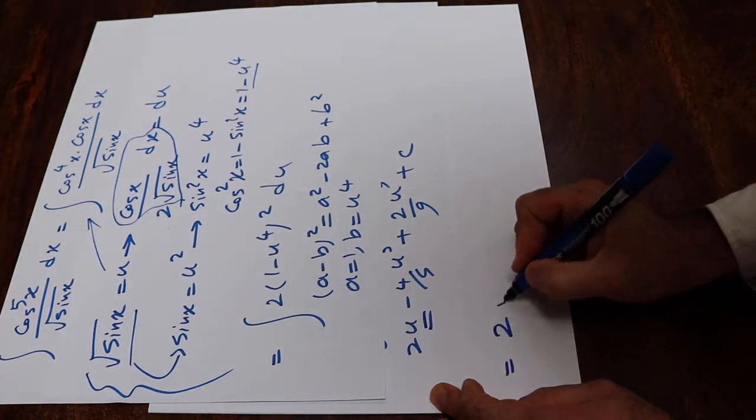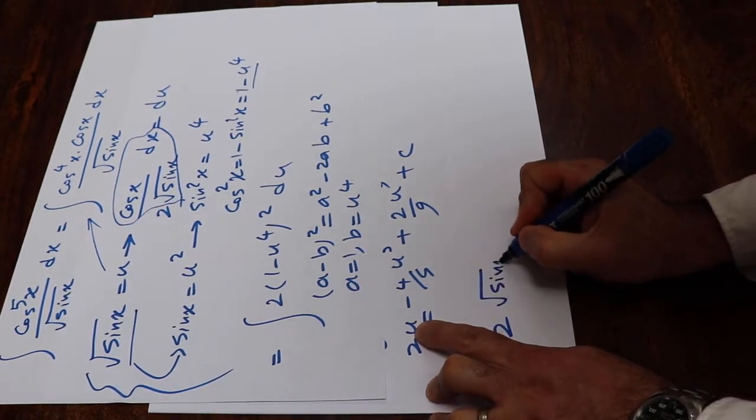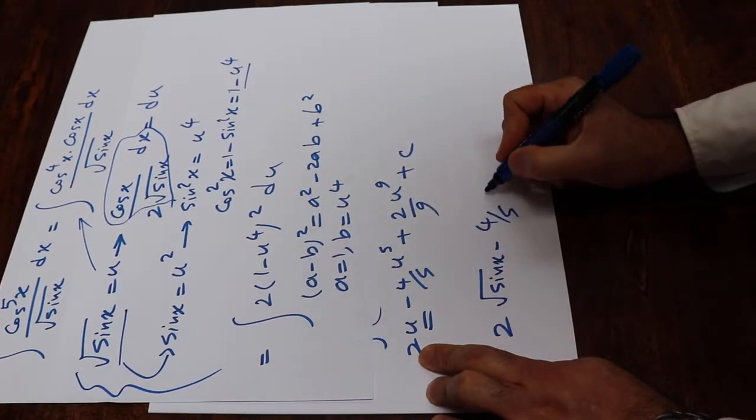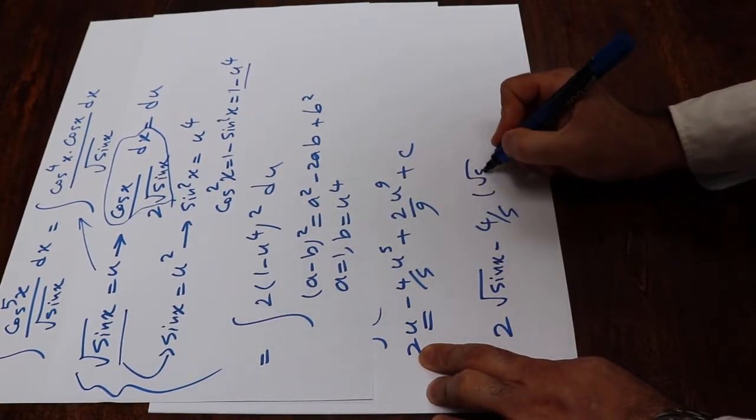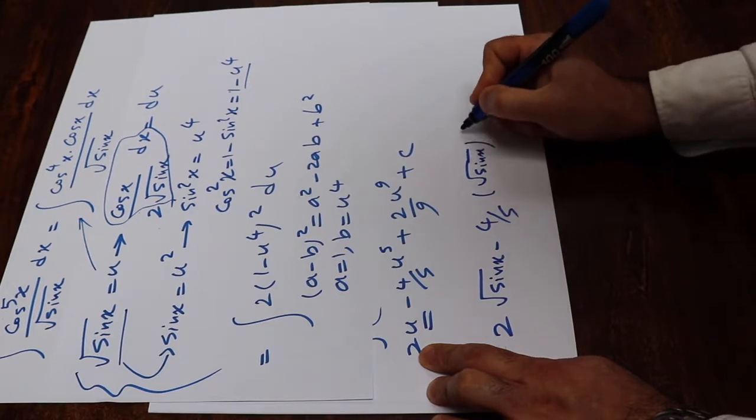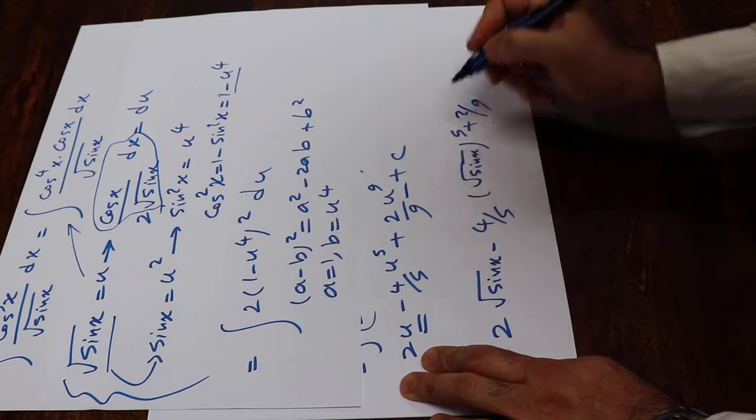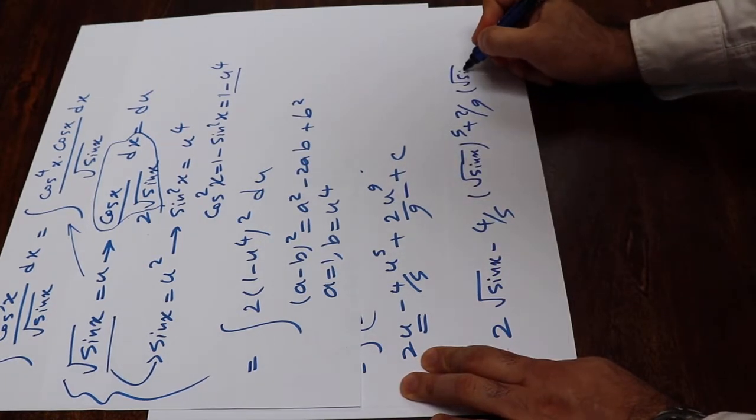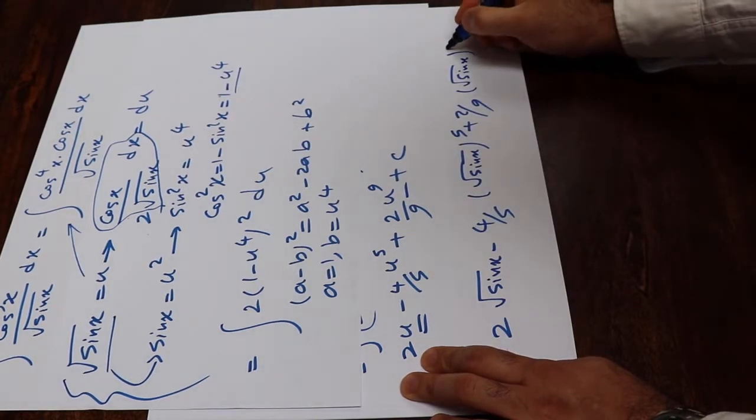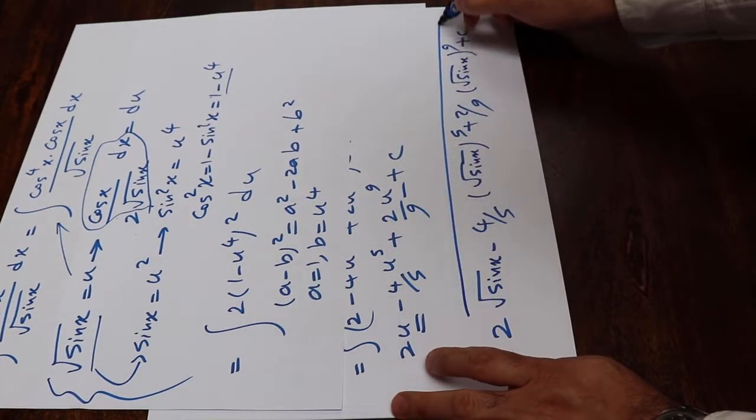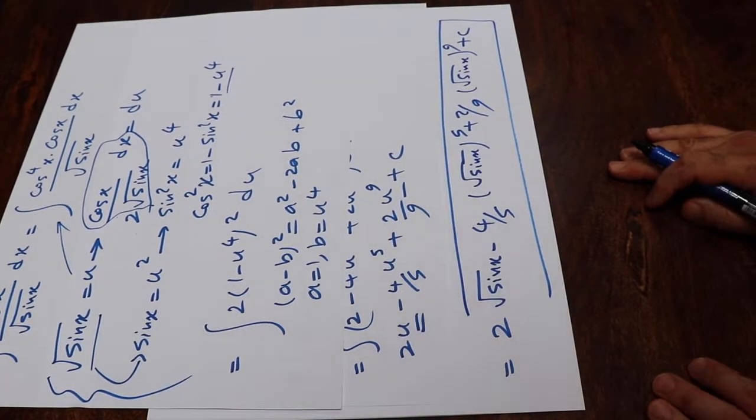that integral will be equal to 2 times square root of sine x minus 4 divided by 5 times square root of sine x to the power of 5 plus 2 divided by 9 times square root of sine x to the power of 9 plus c. And that is the solution to our integral.